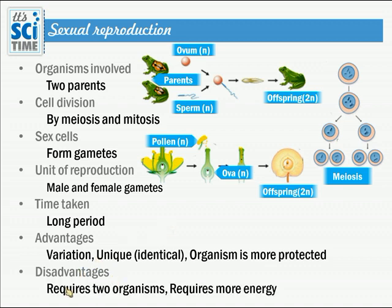Disadvantages of sexual reproduction: it requires two organisms and they need to find a mate. It also requires more energy due to the long and complex process involved. As mentioned, in your tutorial these characteristics are compared in a table. You can replay the video to note them down, or see the note attached as an image below. Next lesson we will discuss vegetative reproduction of plants.